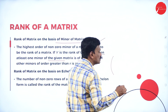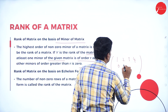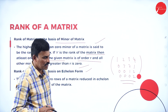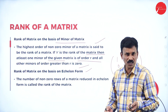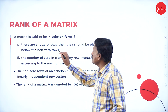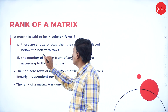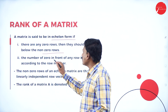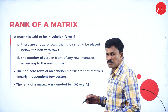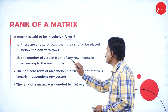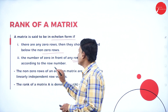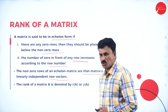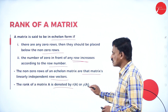What is the meaning of echelon form? For example, consider the matrix [1, 2, 3, 4; 0, 3, 2, 1; 0, 0, 1, 2; 0, 0, 0, 2] — this is an example of a matrix in echelon form. A matrix is said to be in echelon form if any non-zero rows are placed above zero rows, and the number of leading zeros in any row increases according to the row number. The number of non-zero rows of the echelon matrix gives the linearly independent row vectors, and the rank is denoted as R(A).